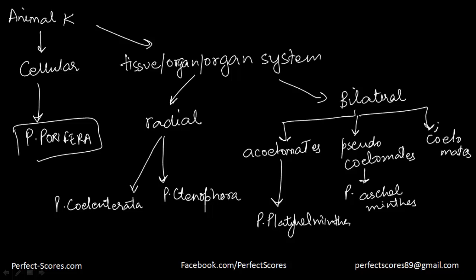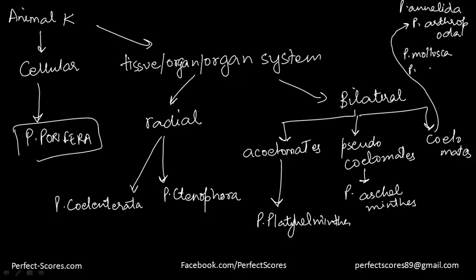Now in the coelomates there are approximately six phylums: phylum Annelida, phylum Arthropoda, phylum Mollusca, phylum Hemichordata, phylum Chordata, and also phylum Echinodermata.